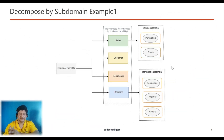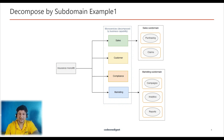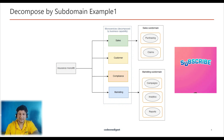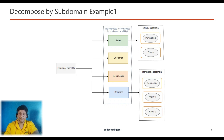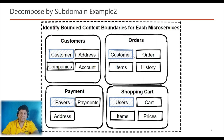Let's understand this design pattern with an example of an insurance monolithic application. The diagram shows that the sales and marketing services are broken down into smaller microservices. The purchasing and claims models are important business differentiators for sales and are split into two separate microservices. Marketing is decomposed using supporting business functionalities such as campaign analytics and reporting — these are the subdomains within the larger domain.